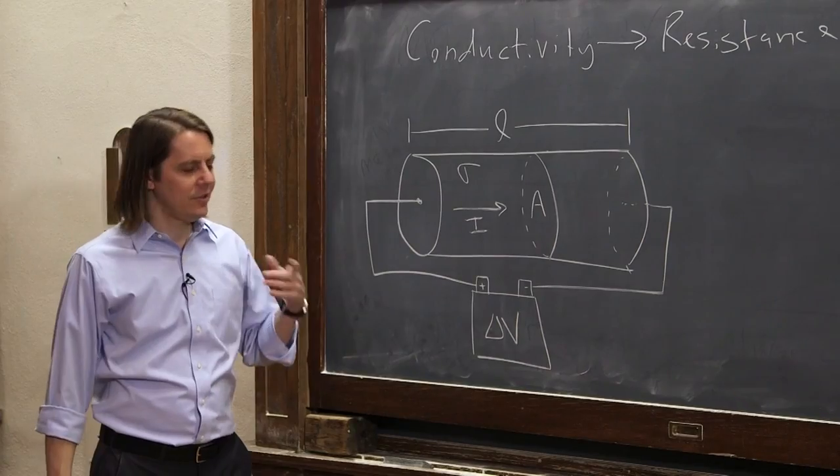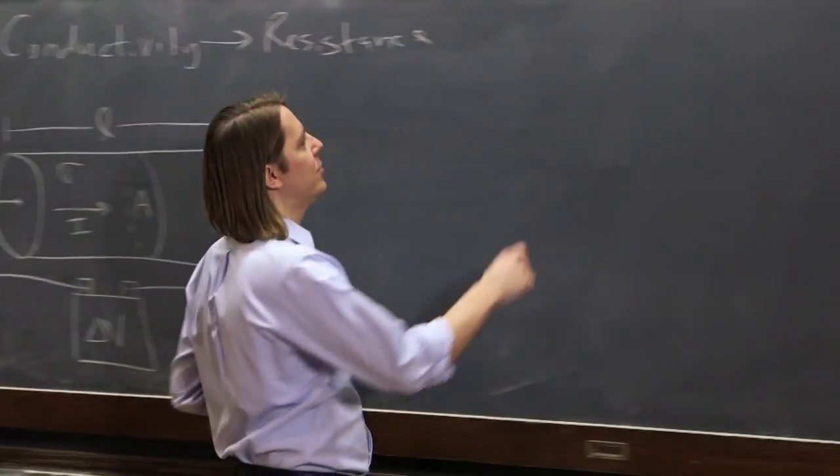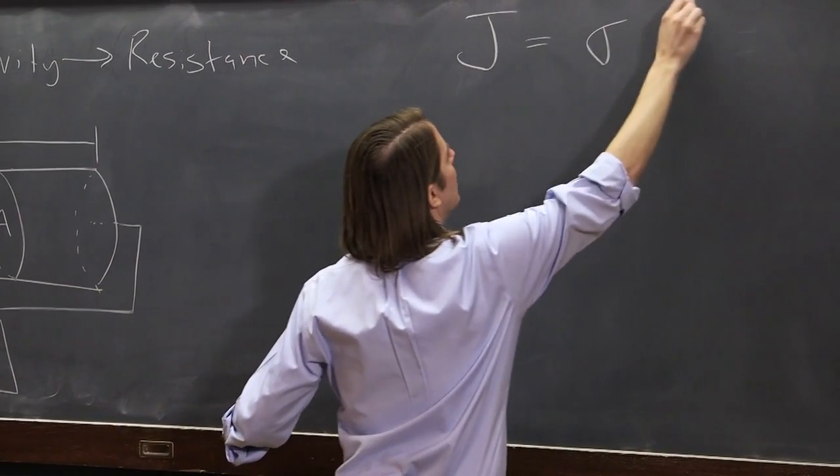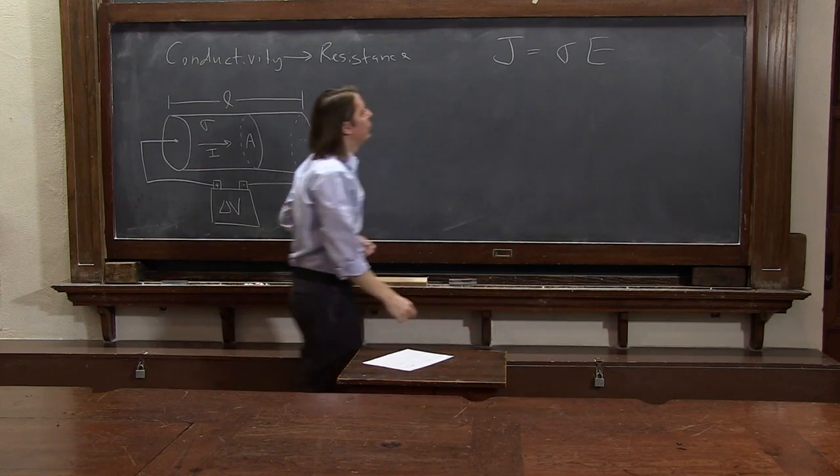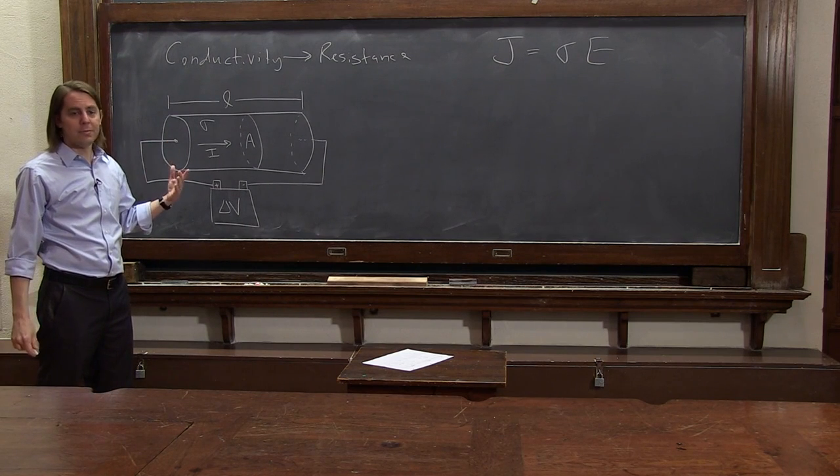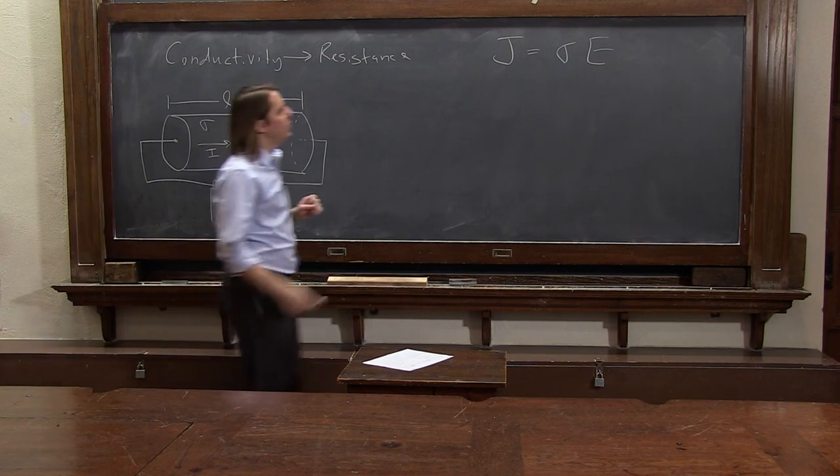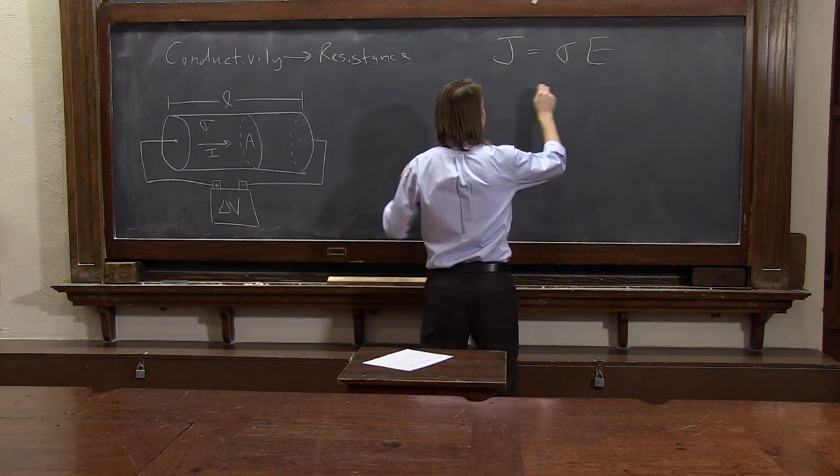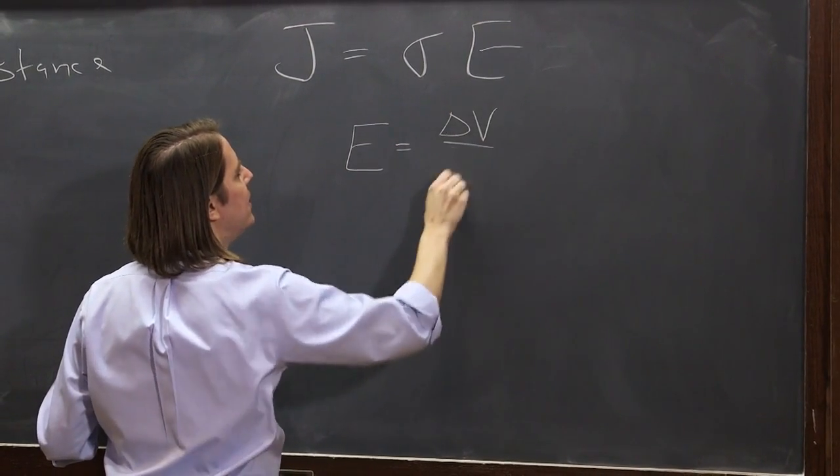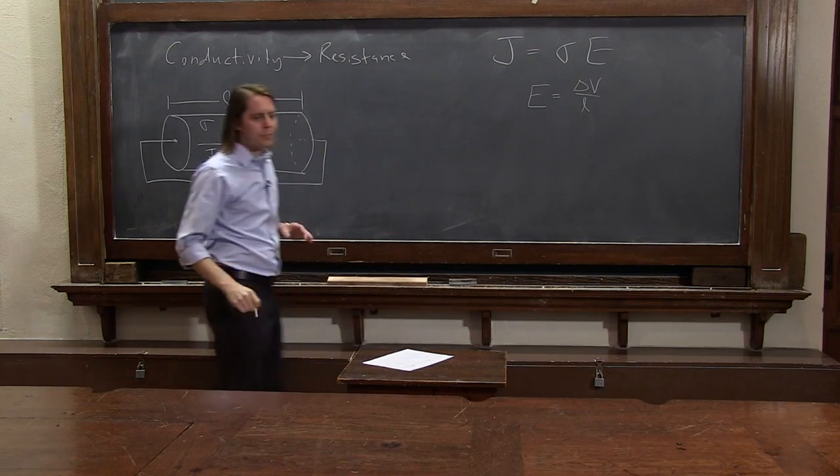So instead of sigma, let's see what else we could say about this. We know we have Ohm's law: J, the current density, current per unit area, equals sigma times the electric field. So we know for a wire, for this conducting wire, E actually is always delta V over L.